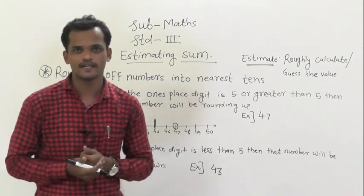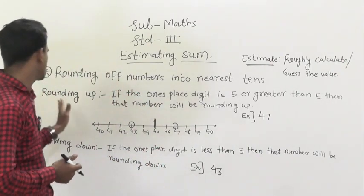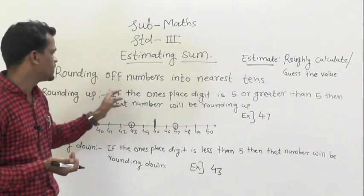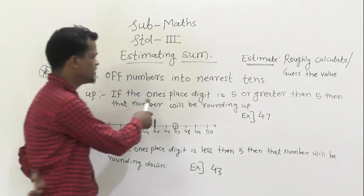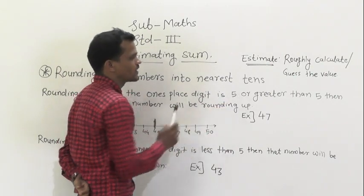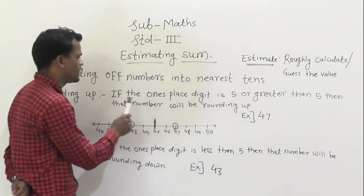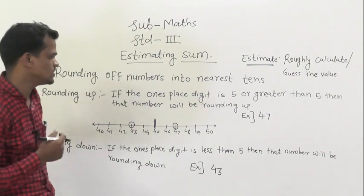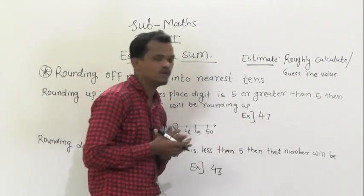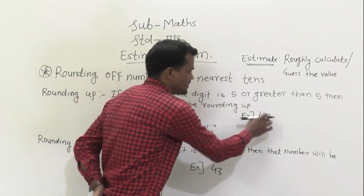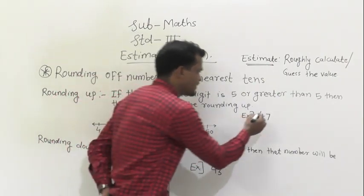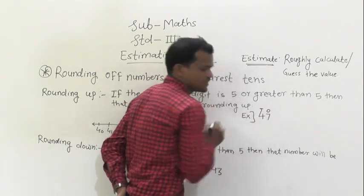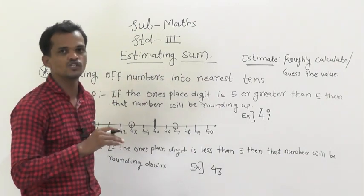First, we will understand rounding up. What does rounding up mean? If the one's place digit is 5 or greater than 5, then that number will be rounded up. For example, look at 47 — the digit at the one's place is 7.